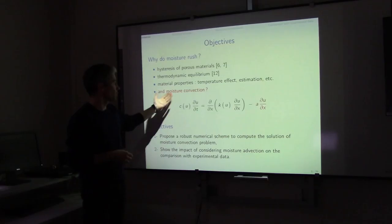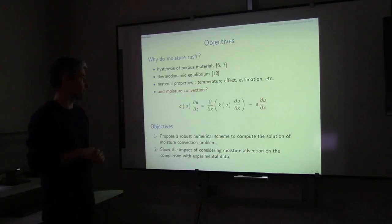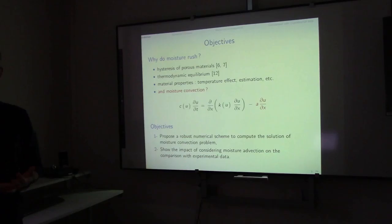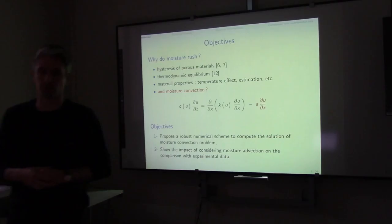No one studies the moisture convection term, which involves a velocity A multiplied by the derivative of the field. The objective of our work was to propose a robust numerical scheme to compute the solution of this kind of advection-diffusion equation, and to show the impact of considering this convection term when comparing results to experimental data.